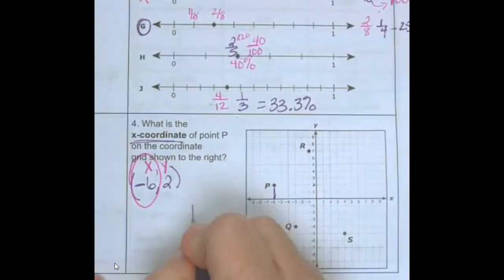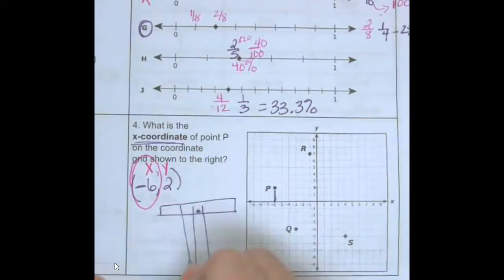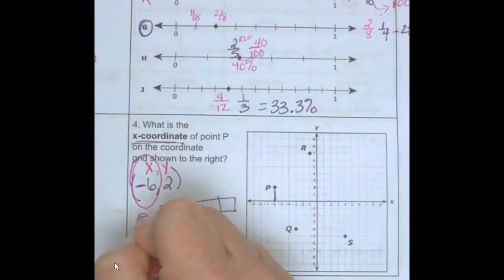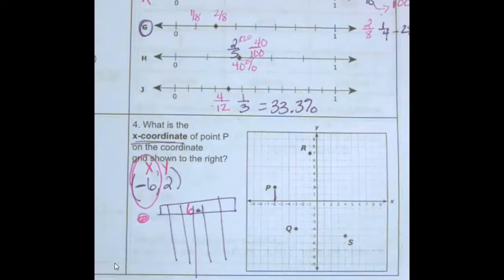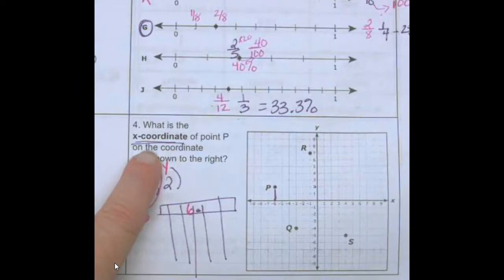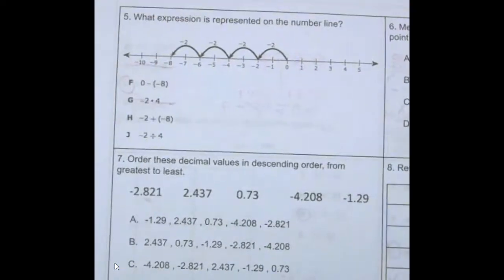If it was a griddable, I would have the six right in front of my decimal and I would bubble in the negative. The six will be right in front of the decimal, not after it. So if they ask for the X coordinate, give negative six. What if they ask for the Y coordinate? Two. Okay, number five.